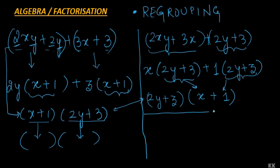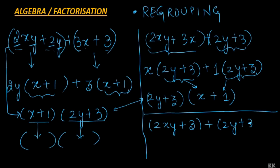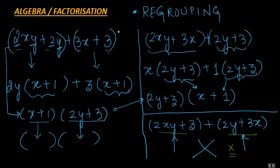Now let us consider one more way of regrouping — taking the first and last terms together and the second term 2y and third term 3x together. We see that in the first bracket there is nothing in common, and in the second bracket there is nothing in common either. If we have nothing in common we will not be able to factorize the expression. So this kind of regrouping does not work. The key point is: when regrouping, we must check whether we are getting a common factor among the two subgroups formed.